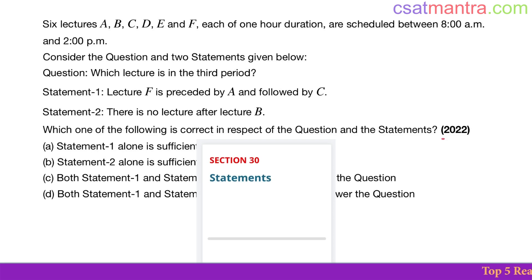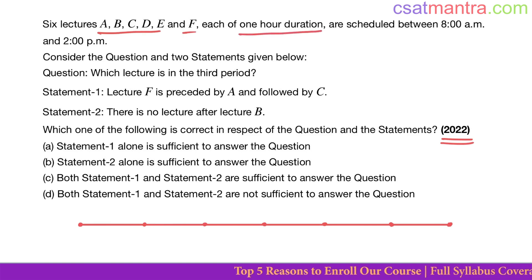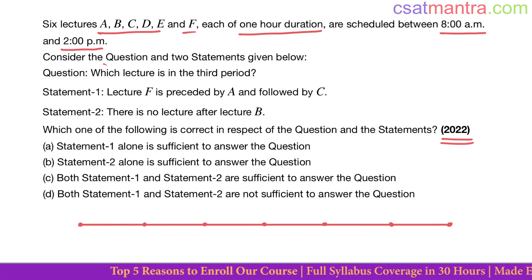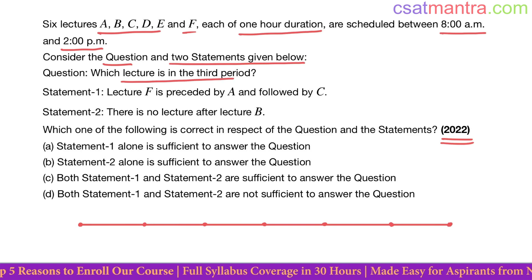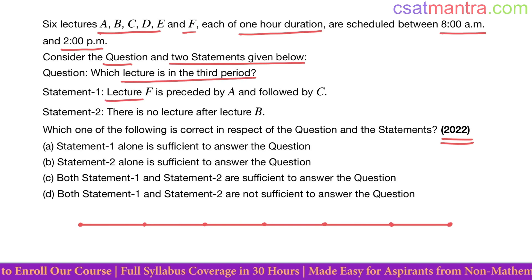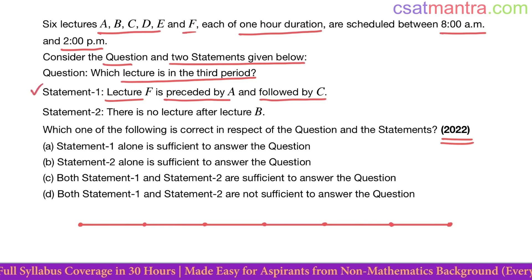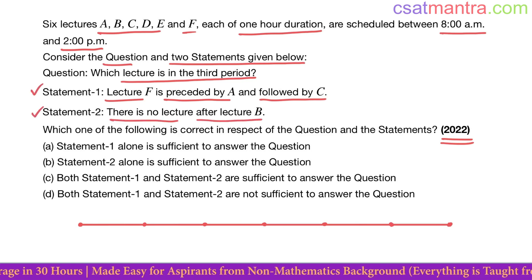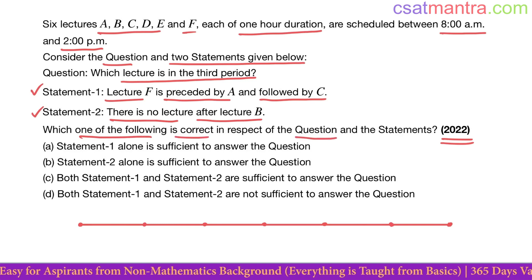This question is from 2022. Six lectures A, B, C, D, E, and F, each of one hour duration, are scheduled between 8 a.m. and 2 p.m. The question asks which lecture is in the third period. A given condition states that lecture F is preceded by A and followed by C.